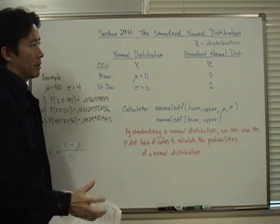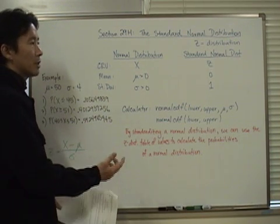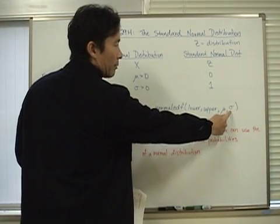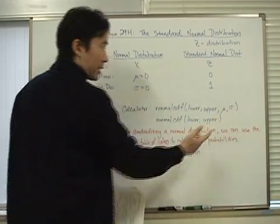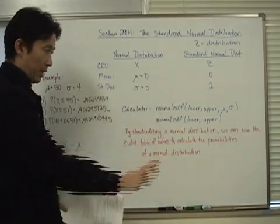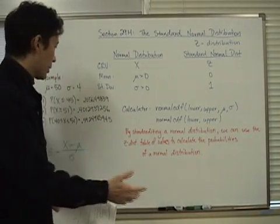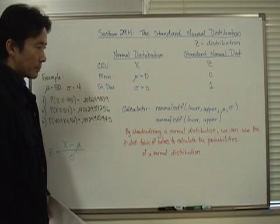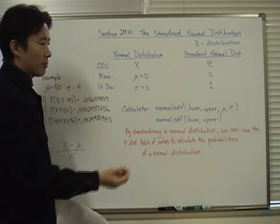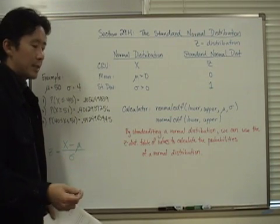What's the difference when we talk about the standard normal distribution? If we're dealing with a standard normal distribution curve on the calculator, we don't have to input the mean of 0 and standard deviation of 1, because for all standard normal distribution curves those values are always the same. We can omit them and just enter the lower and upper bounds to get exactly the same values. By standardizing the normal distribution, we can use the Z distribution table of values to calculate probabilities.